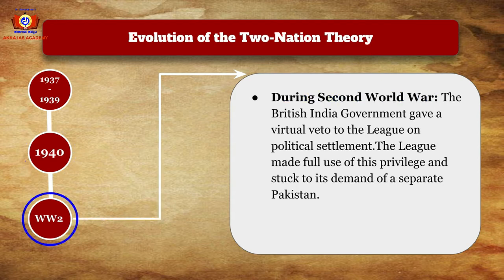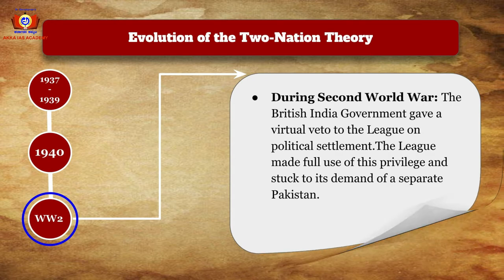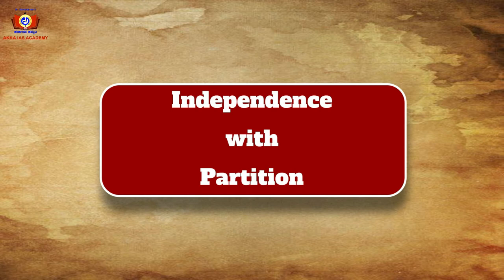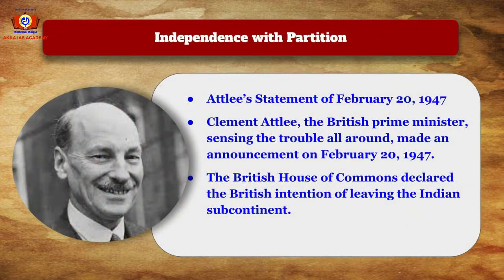During the Second World War, the British India government gave a virtual veto to the League on political settlements, and the League made full use of this privilege by pushing the demand for a separate Pakistan. All these events contributed to the evolution of the Two Nation Theory.